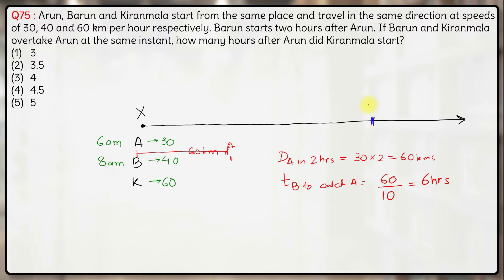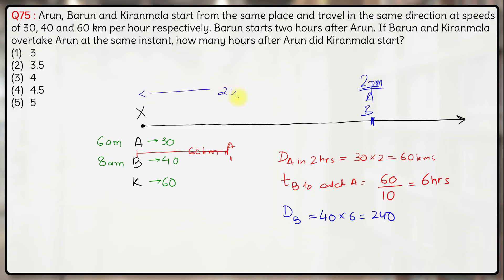Arun and Barun will meet at some point at 2 p.m. The distance travelled by Barun till that time will be speed of Barun multiplied by time travelled, which is 240 km. So they meet at a distance of 240 km from the starting point. Time taken by Kiranmala to travel this 240 km will be 240 divided by 60, which is 4 hours.